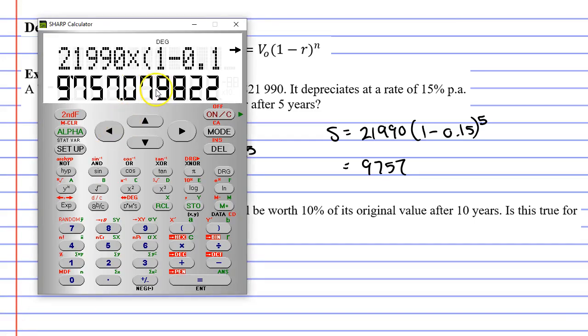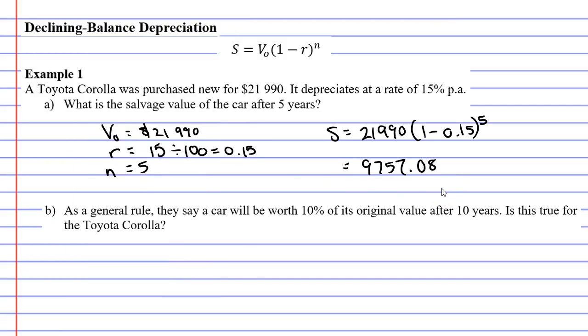$9,757.08, which is the salvage value of the car. It's what I could sell it for in five years' time. If I wanted to, I could also call this V5, meaning the value of the car after five years.